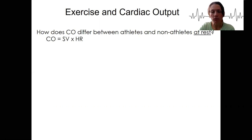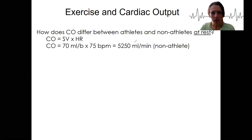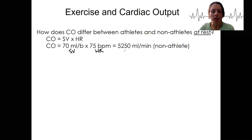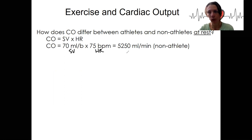A non-athlete might have a stroke volume of 70 milliliters and a heart rate of 75 beats per minute, giving a cardiac output of about 5,250 milliliters per minute. That's a measure of the efficiency of the heart — how well those tissues are getting freshly oxygenated blood, removing carbon dioxide, and getting glucose. It's a helpful thing to have happen.